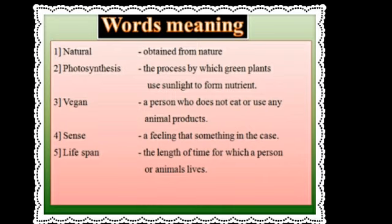Third one: vegan. Vegan means a person who does not eat or use any animal products — means a vegetarian. Fourth one: sense — a feeling that something is the case. Fifth one: life span — the length of time for which a person or animal lives. Children, write the new words and words meaning in your science classwork.